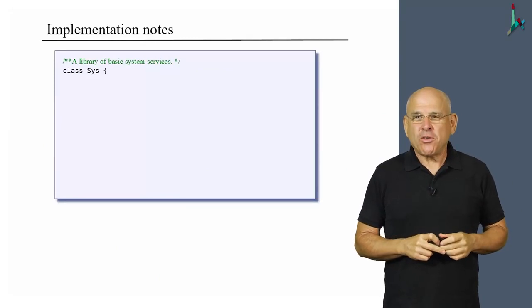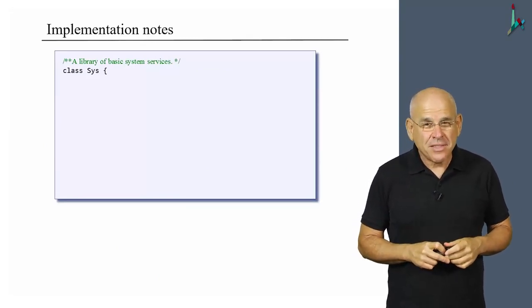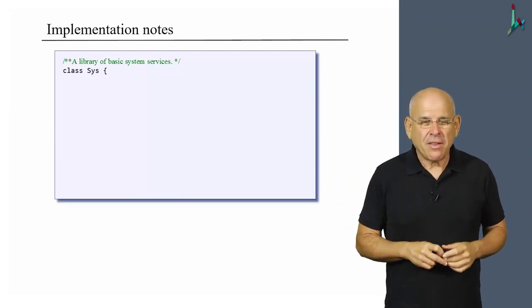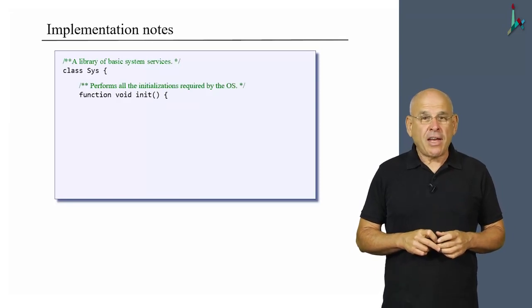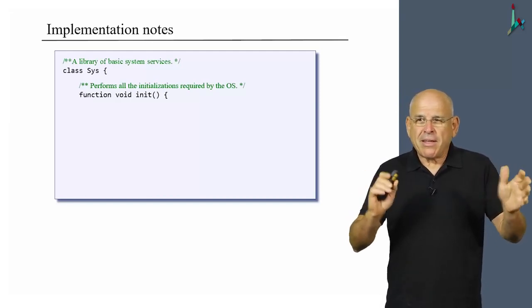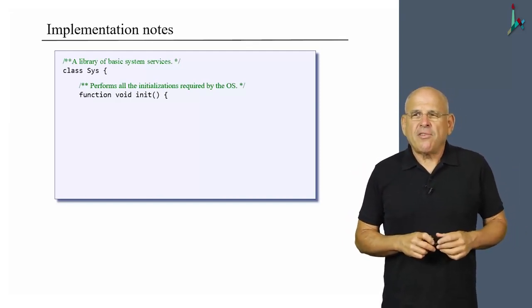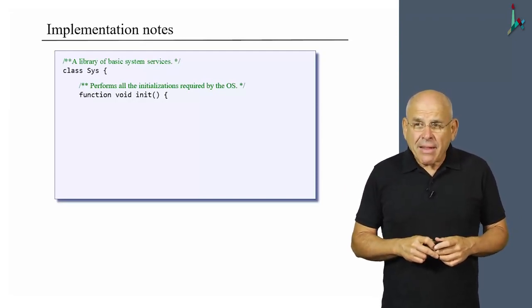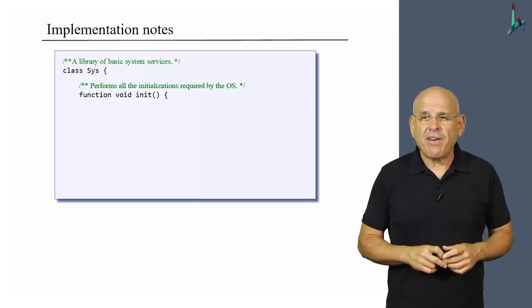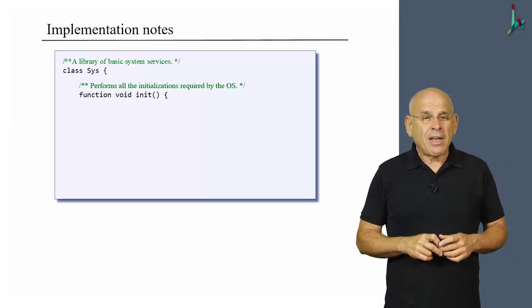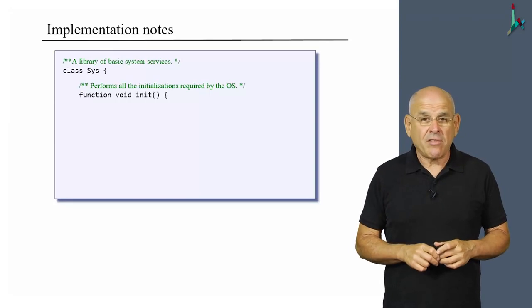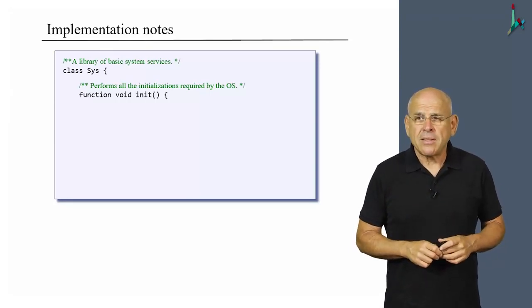Well, the sys class consists of, I think, four methods, of which the most interesting one is a private method that users don't get to see. And this is our init function. Now, I wish to remind you, in Jack we don't have public and private modifiers for class members, but we can write functions and simply not tell the world about them. And init is one of these functions which is absolutely necessary for the operating system but is used strictly for OS services, as I will set out to describe.